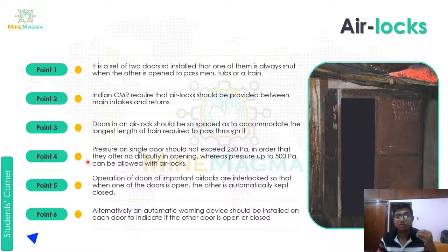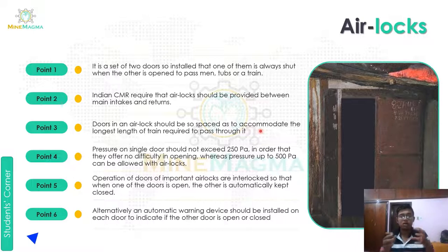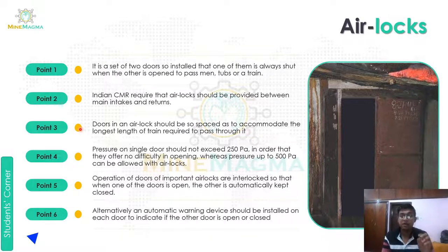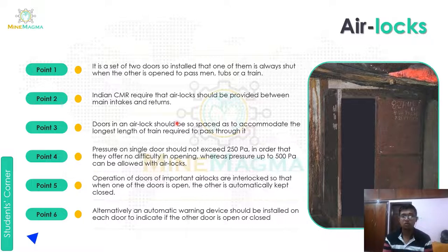Fourth point: pressure on a single door should not exceed 250 pascal in order that they offer no difficulty in opening, whereas pressure up to 500 pascal can be allowed with air locks. So air locks allow higher air pressure — up to 500 pascal — compared to a single door limit of 250 pascal.